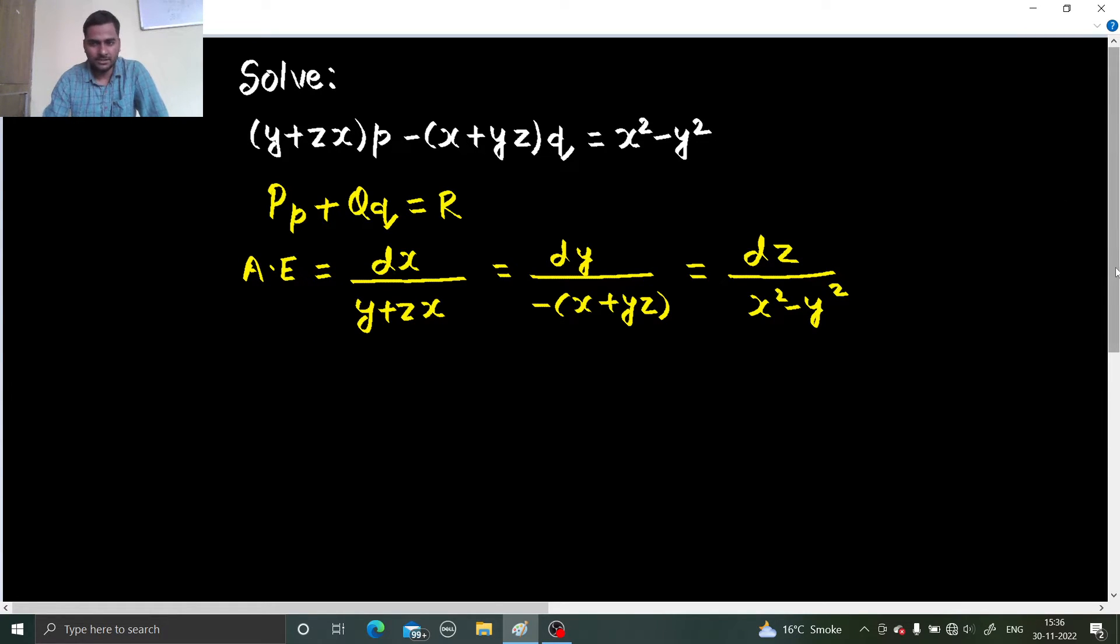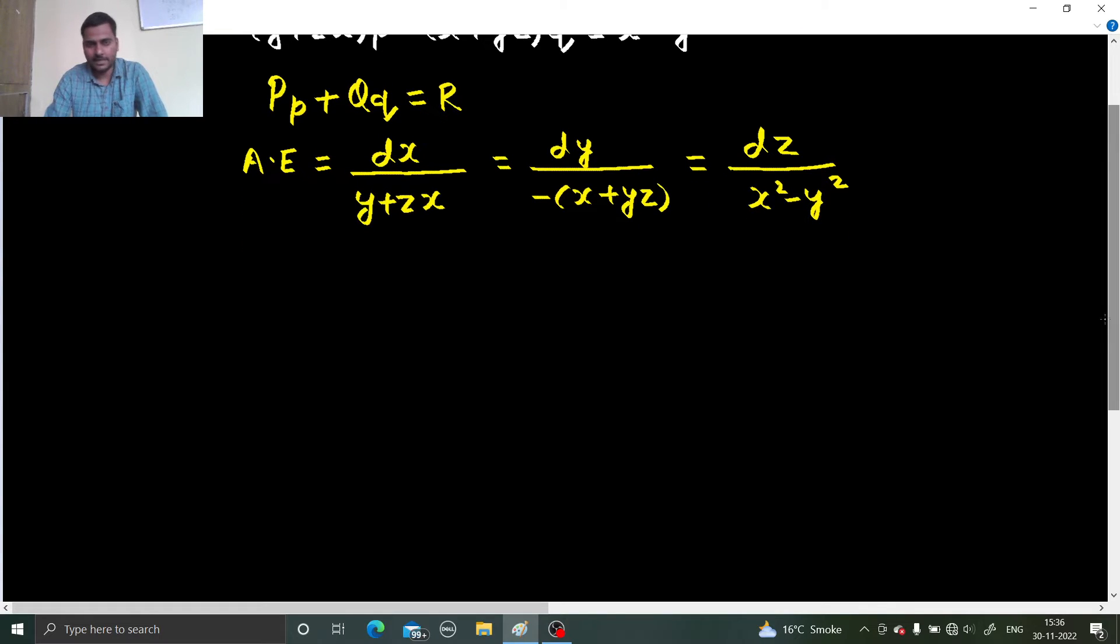Going on with method of grouping is looking difficult from here. So we of course have to make some adjustment and find multipliers. So for such, we need to find such value of L, M and N so that this denominator becomes 0.